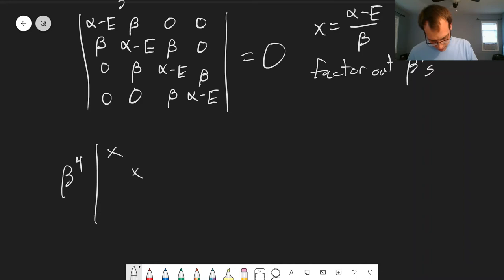So we get beta raised to the fourth power times x along the diagonal, ones where all the betas were, and zeros everywhere else. This just makes it a little bit easier to keep track of alphas plus betas.